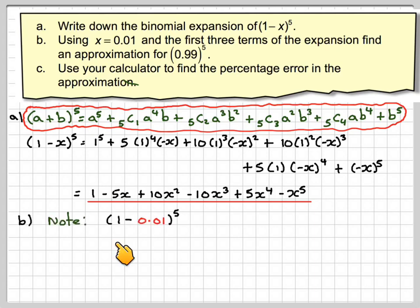So note that if you did 1 minus 0.01 to the power of 5, that is the same as doing 0.99 to the power of 5. So if we use the first three terms of this expansion here with x equal to 0.01.